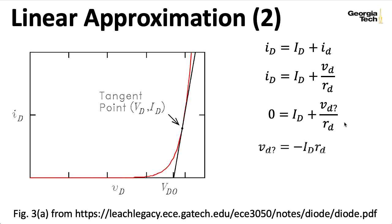I can solve this equation here and say that it's minus capital I capital D times RD. So that's how far I'm going to have to move over. So I can think about VDO as being VD, my quiescent voltage, minus my dynamic resistance times the quiescent current.